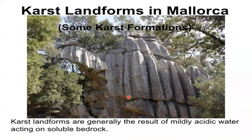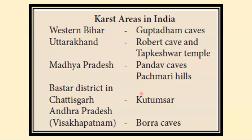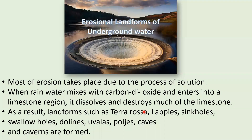Karst landforms are generally the result of mildly acidic water acting on soluble bedrock. In India, karst areas are found in Guptadham caves in western Bihar, Robert cave and Tapkeshwar temple in Uttarakhand, Pandav caves in Pachmarhi Hills in Madhya Pradesh, Kutumsar in Bastar district in Chhattisgarh, and Bora caves in Visakhapatnam, Andhra Pradesh. Most erosion takes place due to the process of solution. When rainwater mixes with carbon dioxide and enters a limestone region, it dissolves much of the limestone, forming landforms such as terra rosa, lapis, sinkholes, swallow holes, dolines, valles, gorges, caves, and caverns.